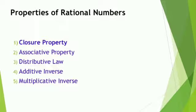First Property है Closure Property, second है Associative Property, third है Distributive Law, fourth Additive Inverse, और five है Multiplicative Inverse.